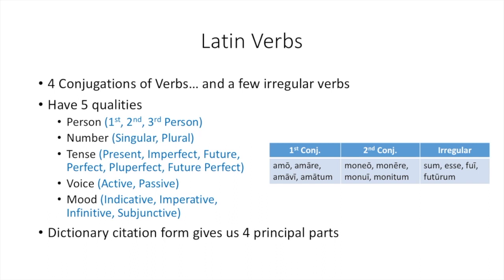Then there are the moods: the indicative mood, which is a statement of fact; the imperative mood, a command; the infinitive, meaning to be; or the subjunctive, which shows potential. For all verbs, the dictionary citation form gives us four principal parts, like amo, amare, amavi, amatum, or sum, esse, fui, futurum.